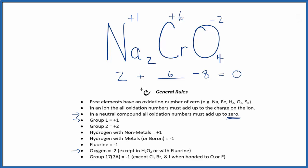So to recap, we've figured out the elements that we knew using these rules here, and then this general rule that in a neutral compound, all the oxidation numbers add up to 0. We use that to find the oxidation number on the chromium.